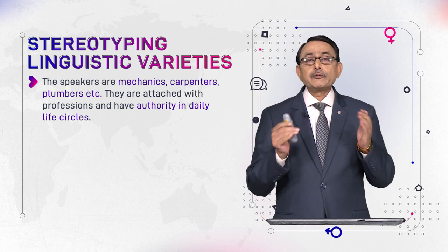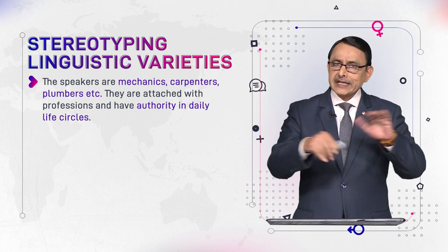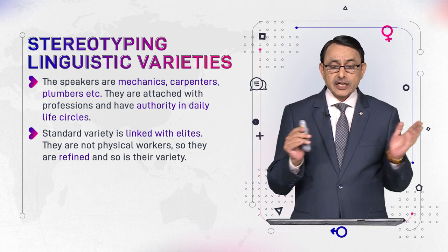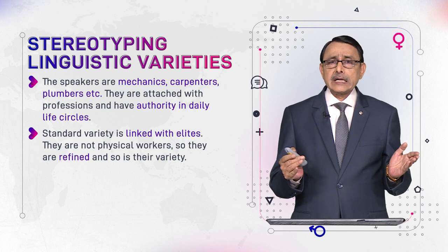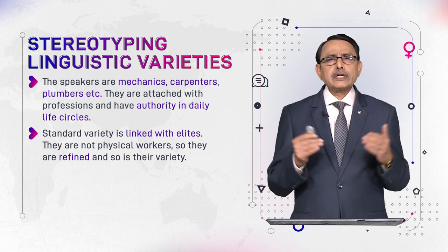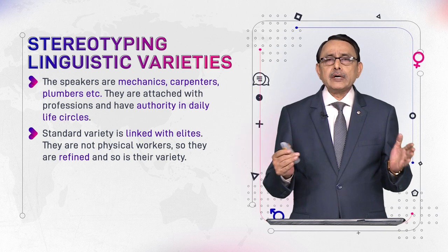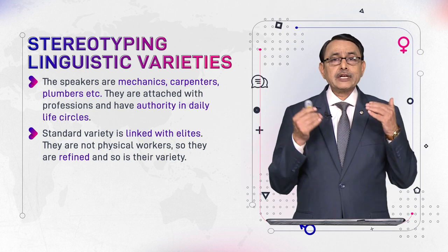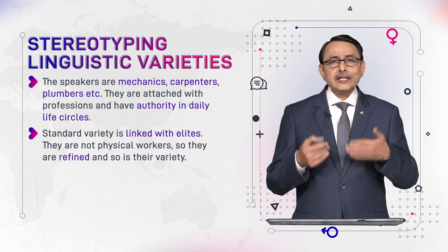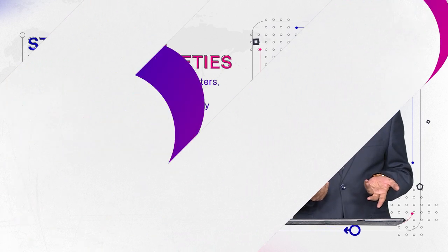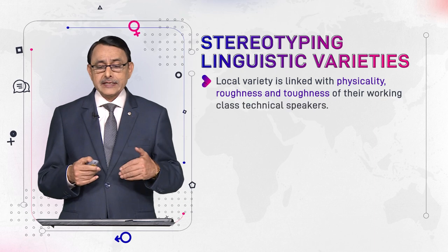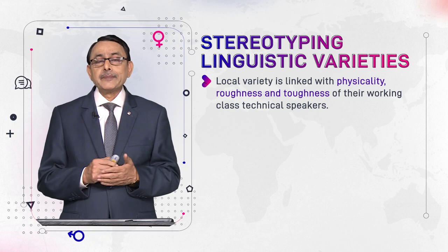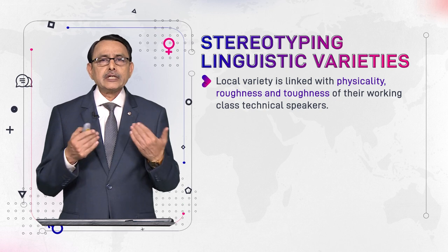These workers are attached with their professions and have authority in daily life. Standard variety, by contrast, is linked with elites. Elites are not physical workers — they are landlords, they work in offices, they enjoy higher posts, they have no physical work. They are regarded as very refined people, and the language they speak is also regarded as refined. Whereas local variety is linked with the physicality, roughness, and toughness of the local class, making the language itself seem rough and tough.